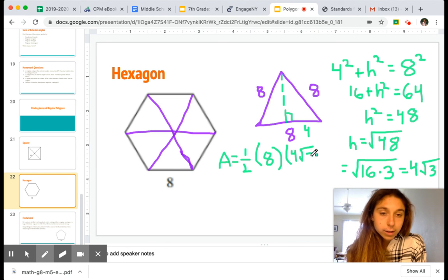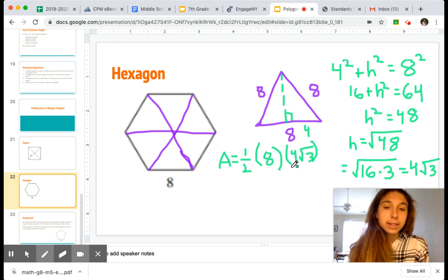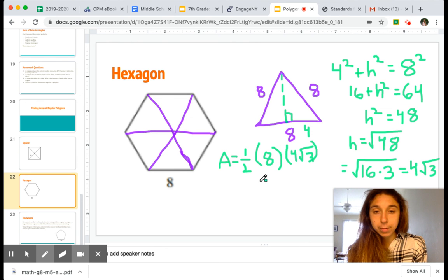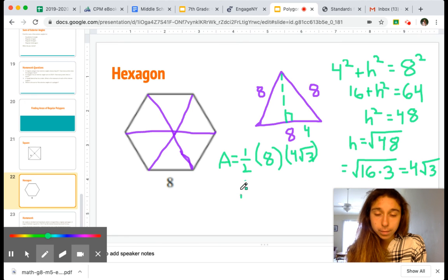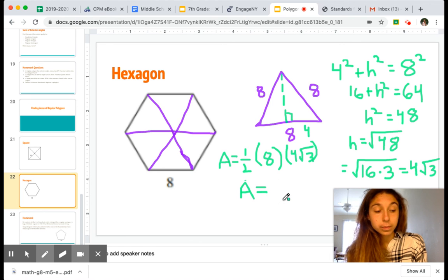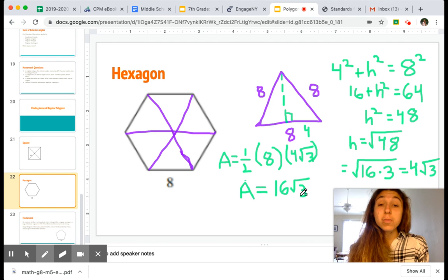Now the root 3 functions just like a variable. So you can think about it as an x. It's just kind of there. And these other numbers are the coefficients that we're multiplying. So when you do one-half times 8 times 4, we get 16 times the square root of 3.